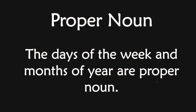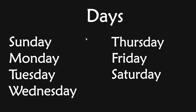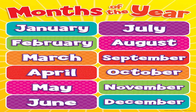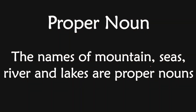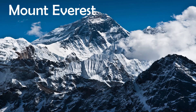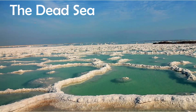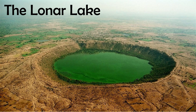The days of the week and months of the year are proper nouns. Days of the week: Sunday, Monday, Tuesday, Wednesday, Thursday, Friday, Saturday — these come under proper noun. The months of the year: January, February, March, April, May, June, July, August, September, October, November, December — these come under proper noun. The names of mountains, seas, rivers, and lakes are also proper nouns. Mount Everest is a proper noun. The Thames River in London is a proper noun. The Dead Sea is a proper noun. Lonar Lake in Maharashtra is a proper noun.